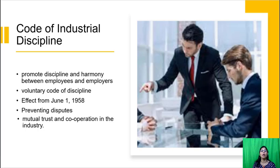The code aims at preventing disputes by providing voluntary and mutual settlement of disputes through negotiations without the interference of any outside agency. According to the code of discipline, both employees and employers voluntarily agree to maintain and create an atmosphere of mutual trust and cooperation in the industry.